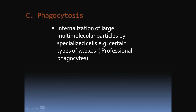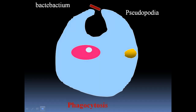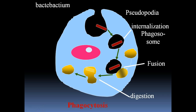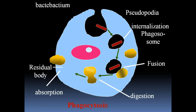Next, phagocytosis — we are already aware of this process. The different phases of phagocytosis shown are: first, internalization; second, fusion; third, digestion; then absorption and formation of a residual body; and finally, expulsion of the residual body. This is the complete fate of phagocytosis.